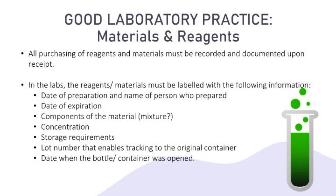Besides equipment, all the materials and reagents used in the study must also be handled in a systematic manner. The process of purchasing must be recorded and documented once the items are received. The labels of the reagents or materials should include the following information: the date of preparation and who prepared it, the date of expiration, the components of the material if it is a mixture, the concentration of the reagent, the storage requirement such as whether it needs to be stored at refrigerated temperature, the lot number which allows tracking back to its original container, and the date when the bottle or container is opened if the chemical is used straight from its original container.